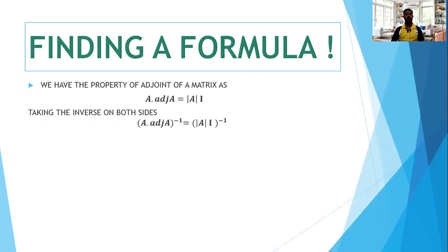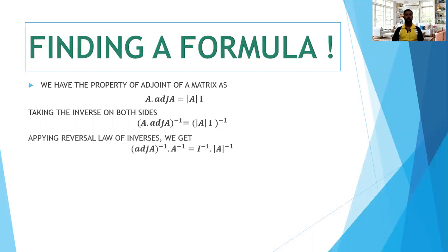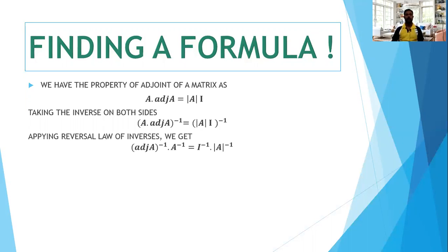So what happens to the left side? For A into adjoint A, all inverse — in place of B you consider adjoint A. By the reversal law of inverses, we get adjoint A inverse into A inverse equals, on the right side, I inverse into determinant A inverse.